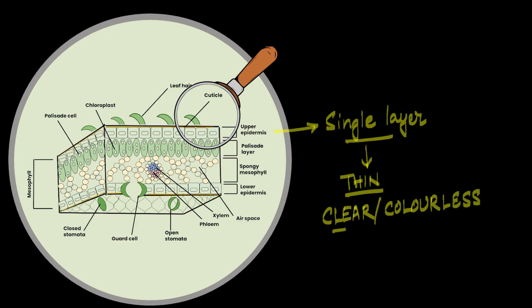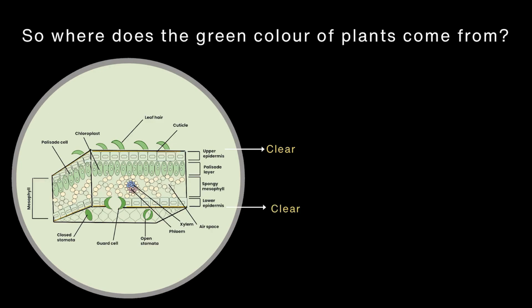So, if the epidermis is colourless, where do plants get their green colour from? Well, the green colour of plants comes from the layers between the epidermis which is filled with mesophyll cells. These cells are loaded with chloroplasts and hence are green in colour.